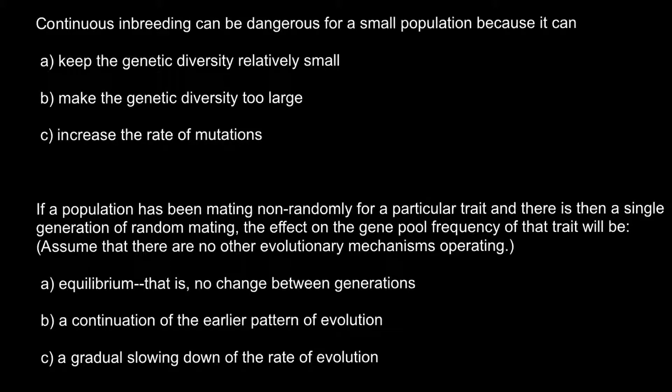Continuous inbreeding can be dangerous for a small population because it can — and here are three answers to choose from. Answer A: keeps the genetic diversity relatively small. Answer B: makes the genetic diversity too large. And answer C: increases the rate of mutations.